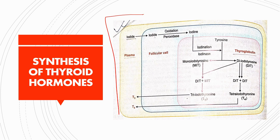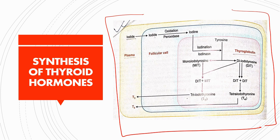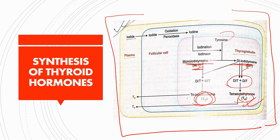This is the synthesis chart, which you will also find in your textbook. You can see how iodination of tyrosine helps in the formation of monoiodotyrosine (MIT) and diiodotyrosine (DIT). MIT and DIT merge to form T3, while two DIT molecules merge to form T4.